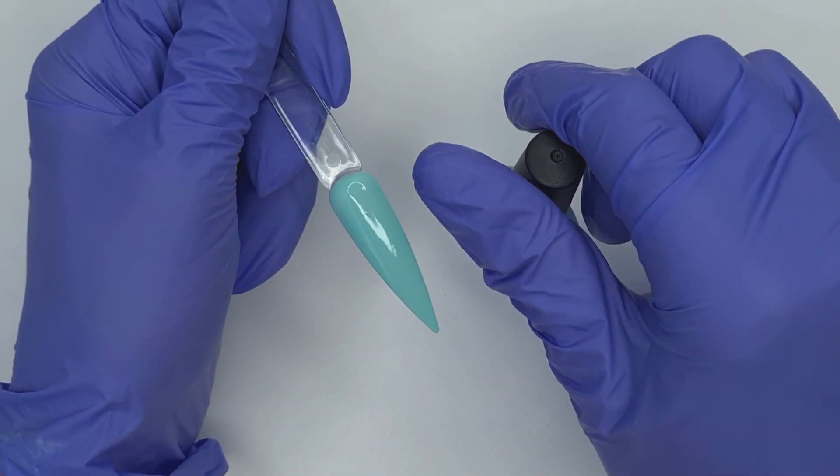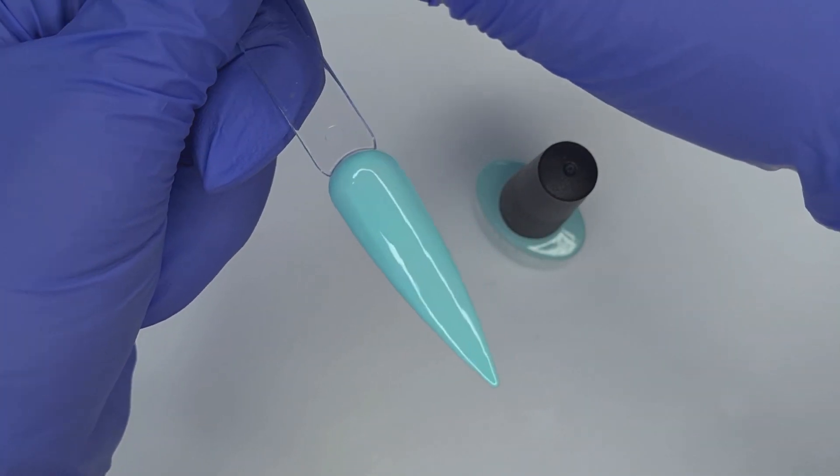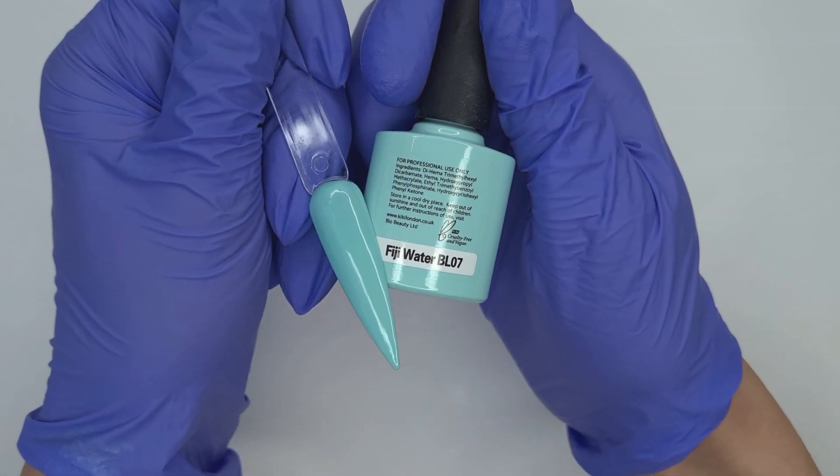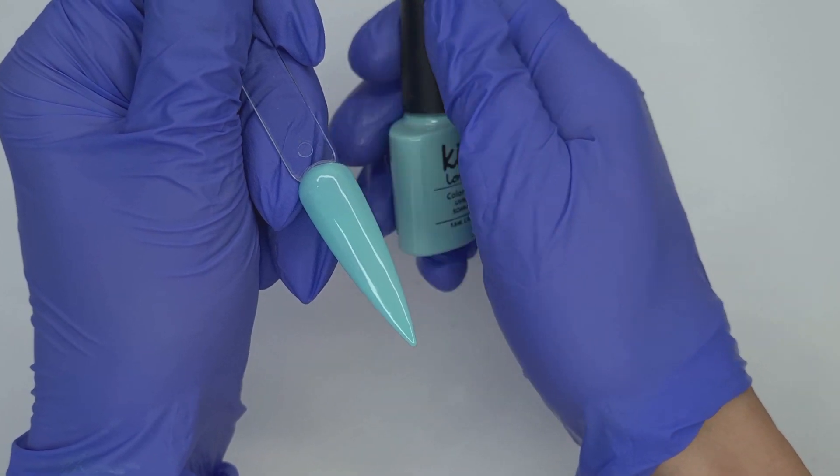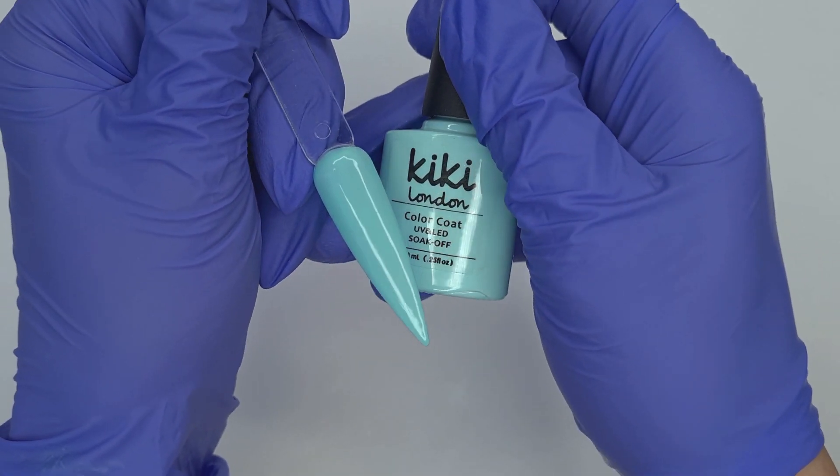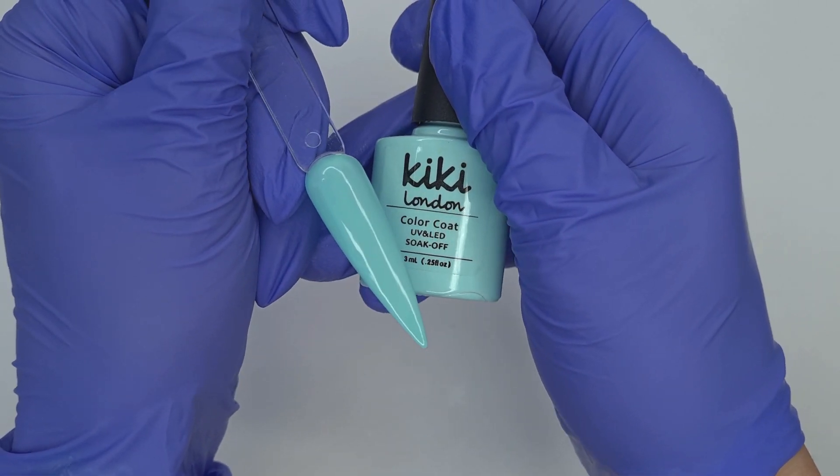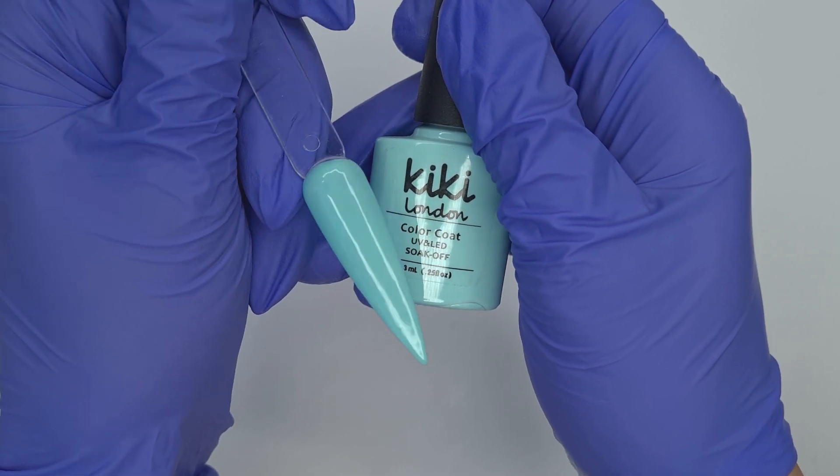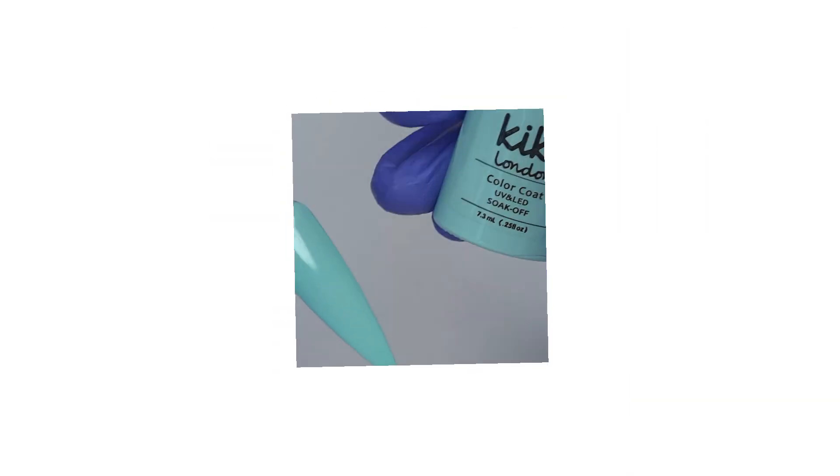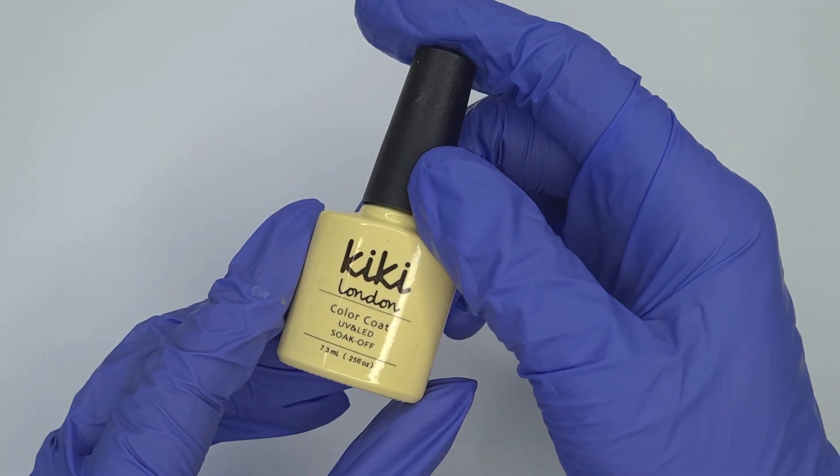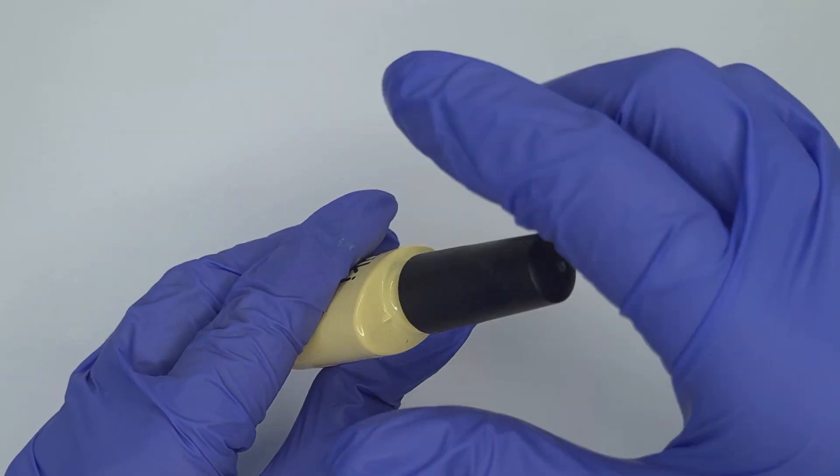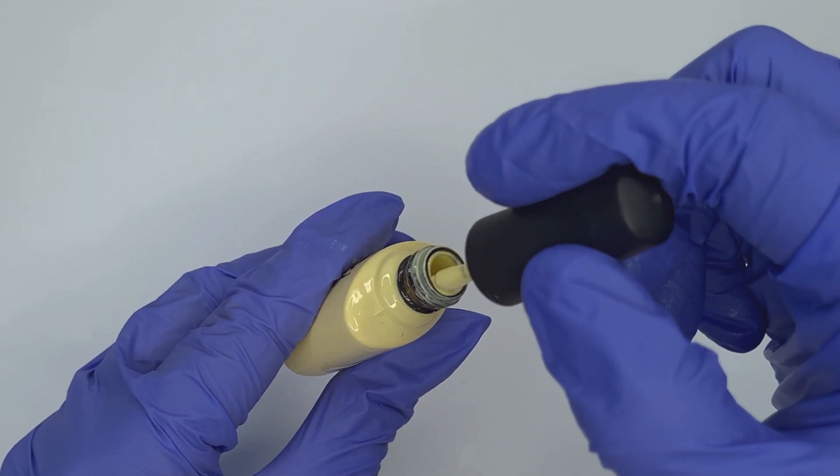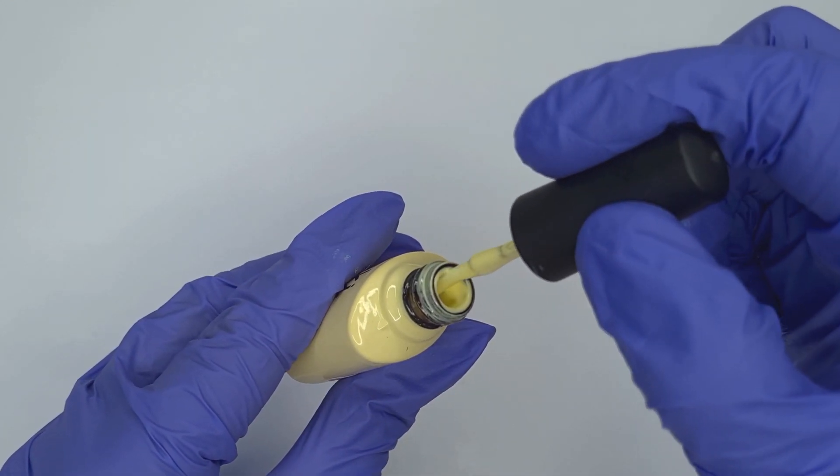Although this is an older collection, the 2019 collection, it is still available to purchase as a collection on the Kiki London website. If you purchase it as a collection it works out a little bit cheaper rather than purchasing the colors individually. However the colors are there to purchase individually if there's only a couple of them that you might want. I do also have a discount code for Kiki London which I will leave in the description box below which will get you 10% off your order.